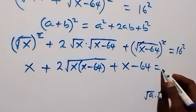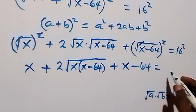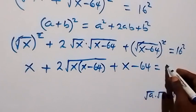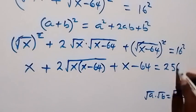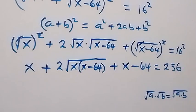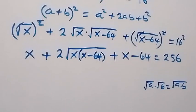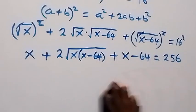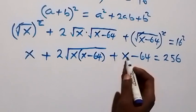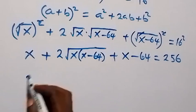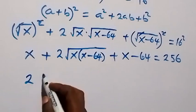This equals 16² which is 16 × 16 = 256. Then we add the like terms: x + x gives us 2x.